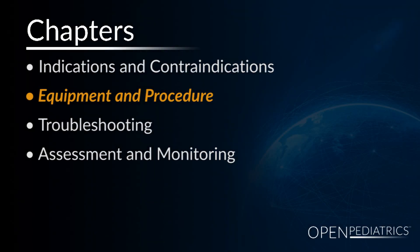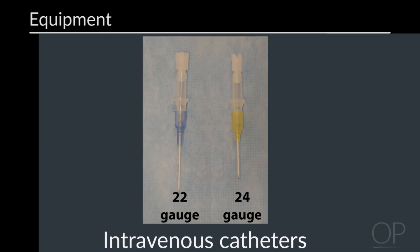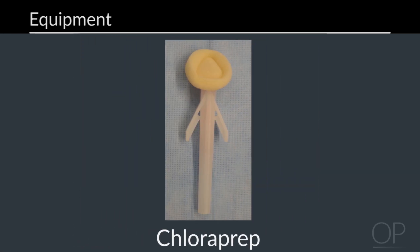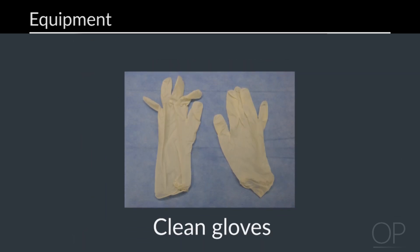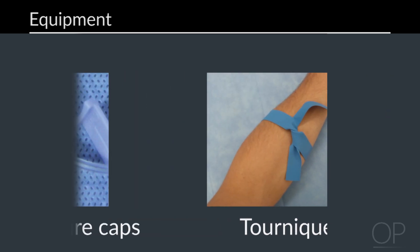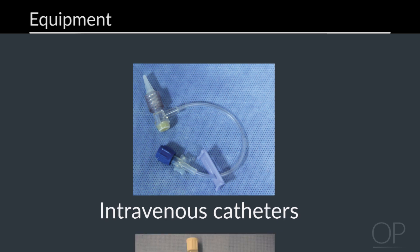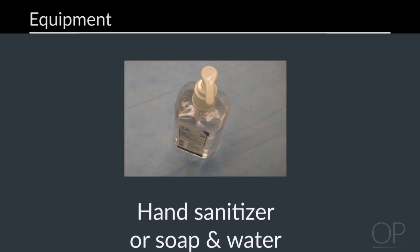Equipment and procedure. It is essential to gather the necessary equipment before you start. The equipment you should prepare includes the appropriate sized IV catheter, a 2x2 gauze, an alcohol or chloroprep solution, clear adhesive dressing, clean gloves, tourniquet, a positive pressure cap if available, a T-connector or extension tubing, saline flush, stabilization board, tape, and alcohol-based hand sanitizer or soap and water for hand hygiene.